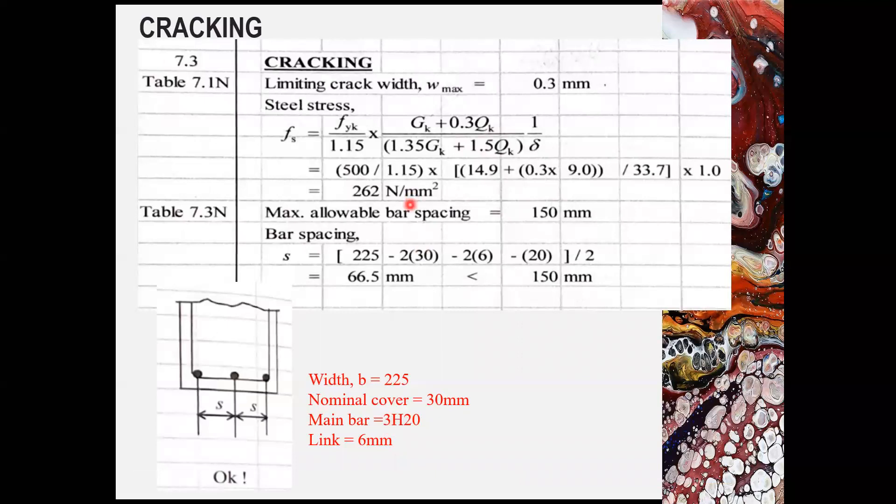Once you have obtained the allowable bar spacing for crack control, you need to check on the actual bar spacing. So given the width is 225 mm, nominal cover is 30 mm. The main bar is 3H20 and the link is 6 mm.